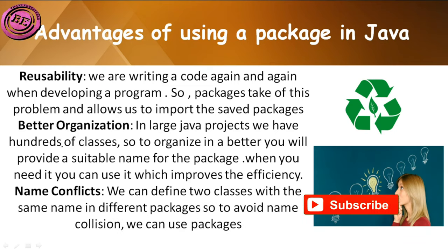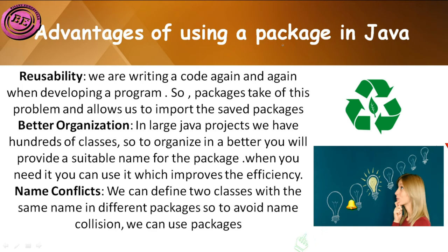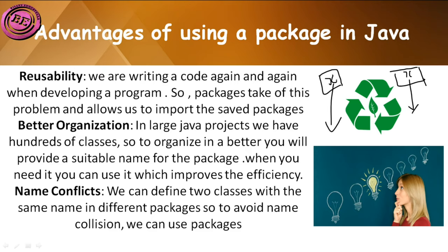Name conflicts — we can define two classes with the same name in different packages. So to avoid name collision, we can use packages. For example, in one package we have a class named x, and in another package we also have a class named x. The package names are different but the class names are the same. If you have any doubts, comment below, like the video, and press the bell icon for notifications.